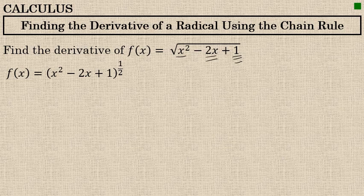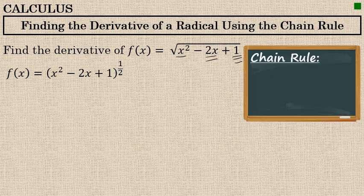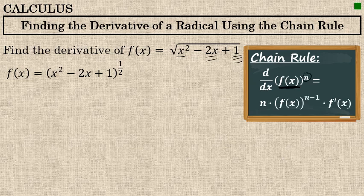Now I'm ready to differentiate with the chain rule. The chain rule in this situation can be thought of as: the derivative of f of x, where f of x is any differentiable function, to the n power, is equal to — the power goes to the front, the function is unchanged, and the power is reduced by 1, and then multiplied at the end — chained along at the end — is the derivative of that function.